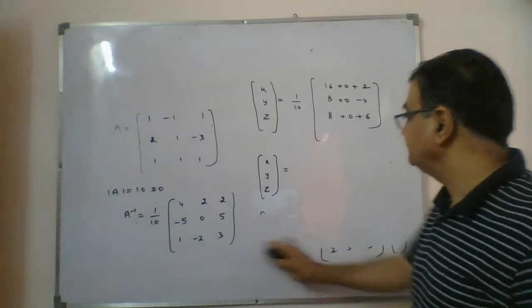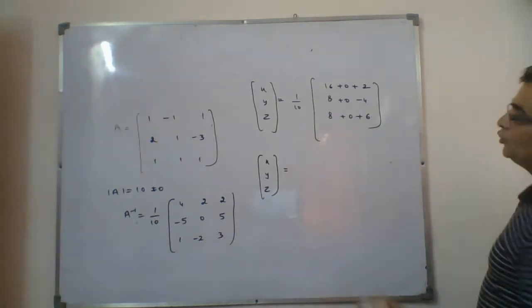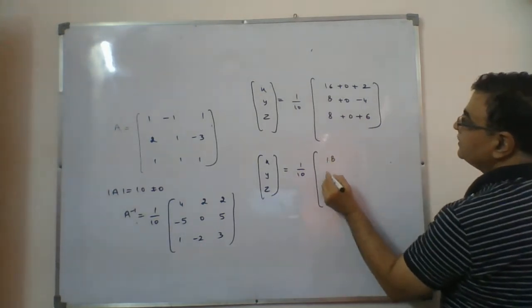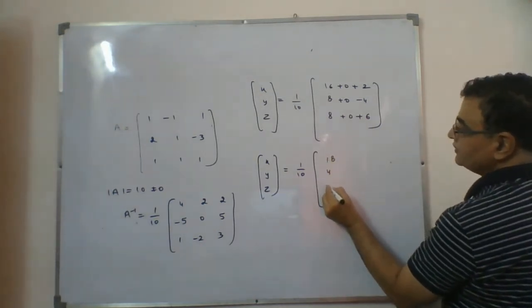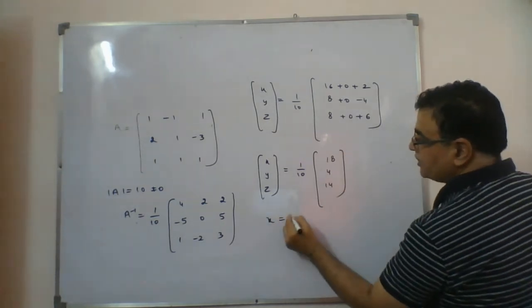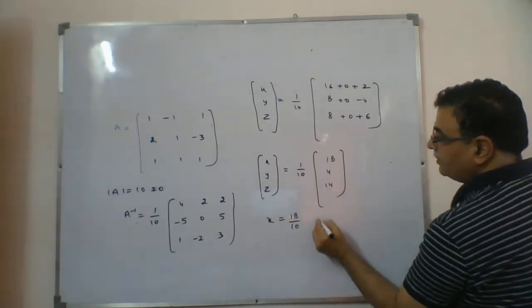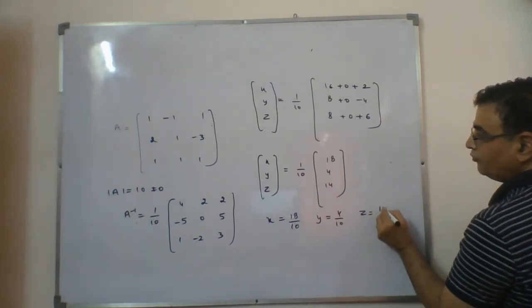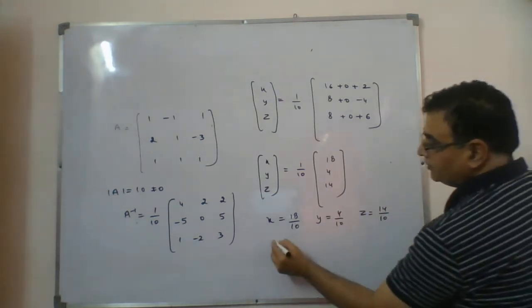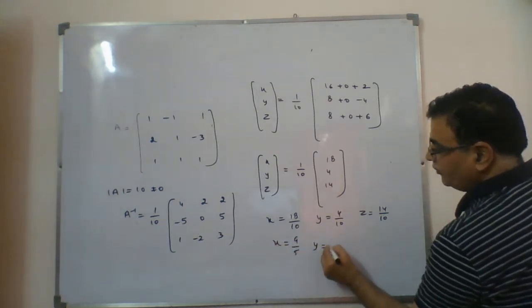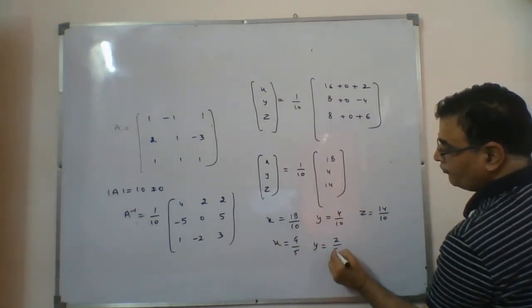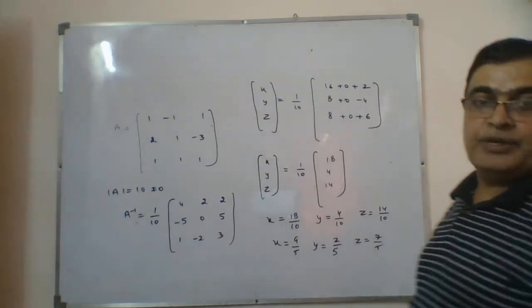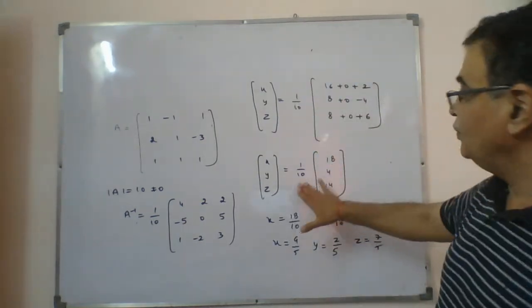So the result is (1/10) times [18, 4, 14]. Therefore x = 18/10 = 9/5, y = 4/10 = 2/5, and z = 14/10 = 7/5. So this way you will have the answer, and you can calculate this easily.